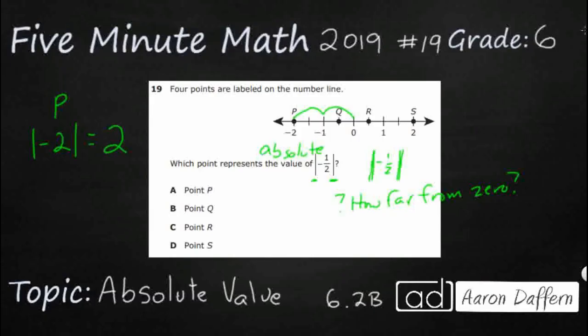That might look a little confusing because you're thinking, what happened to the negative? We're not worried about negative or positive when dealing with absolute value. We're just wondering how far it is from zero. It doesn't matter which direction. It is two away from zero because it's at negative two. Therefore, the absolute value of P, negative two, is two.